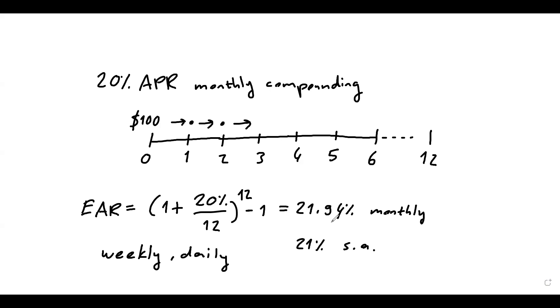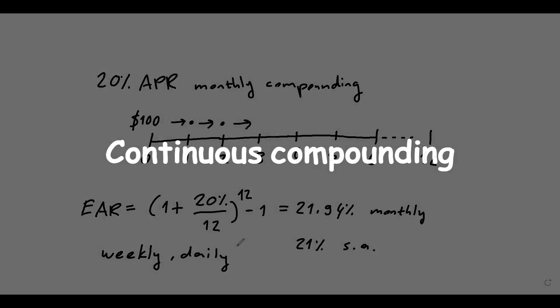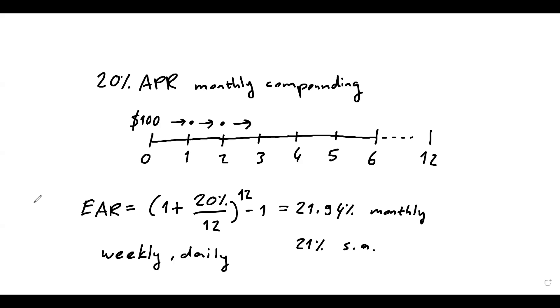And each time, the EAR would keep increasing. It won't increase massively, but weekly EAR will be higher than monthly, and daily EAR will be higher than weekly. And there is a limiting case. So that's the last thing I would like to show you in this video. The limiting case is called continuous compounding.